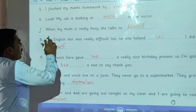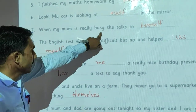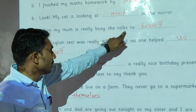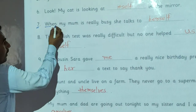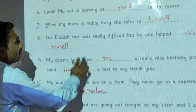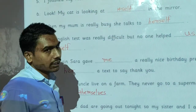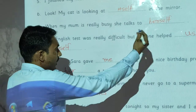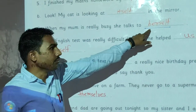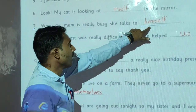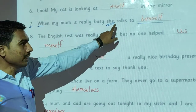Number seven. When my mom is really busy, she talks to herself. According to sentence meaning, we use the reflexive pronoun 'herself' because the subject is 'she'.